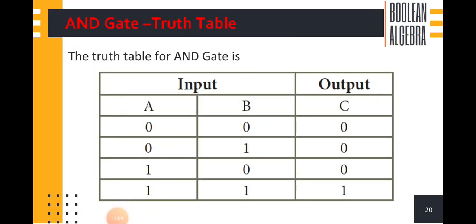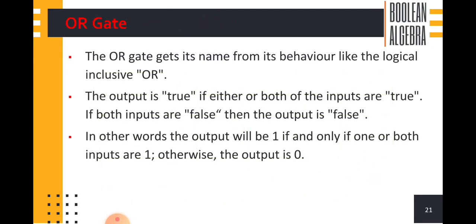The OR gate gets its name from its behavior like the logical inclusive OR. The output is true if either or both of the inputs are true — at least one input true gives true output. If both inputs are false then the output is also false. The output will be 1 if and only if one or both inputs are 1, otherwise the output is 0. In the next class we see about the logic circuit for OR gate, NOT gate, and universal and derivative gates.